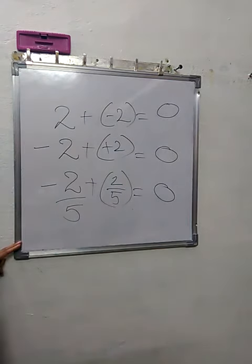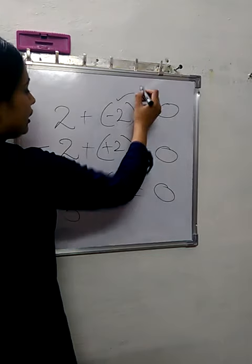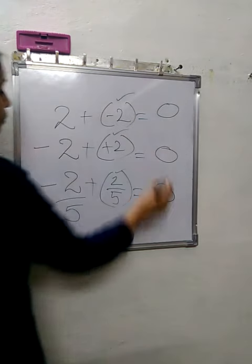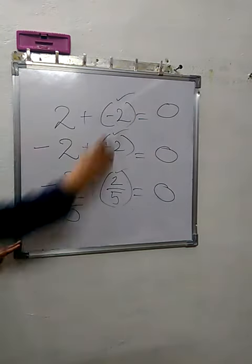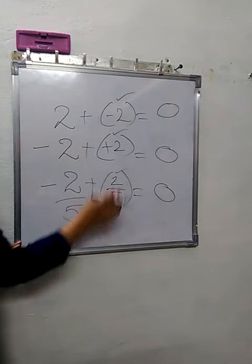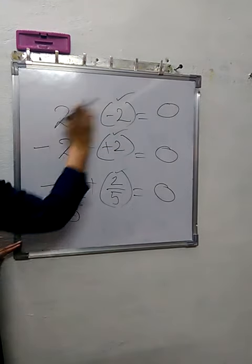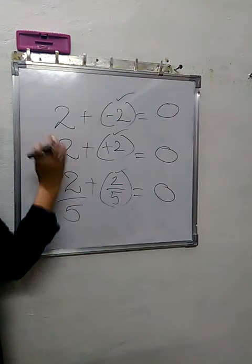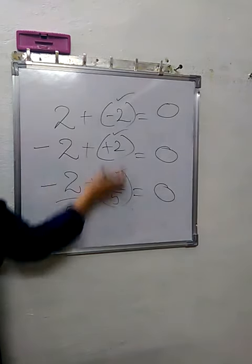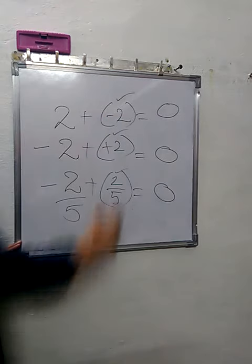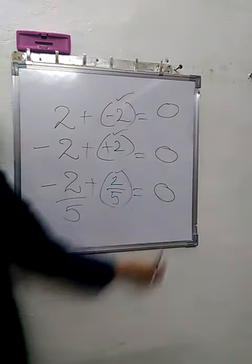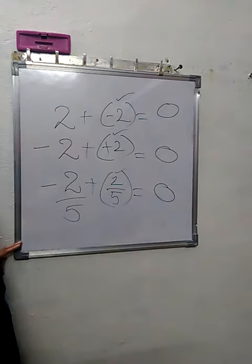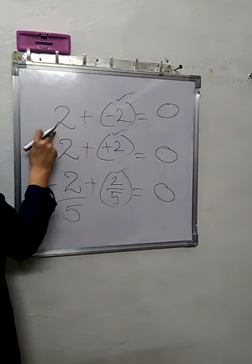Sorry, answer is 0. So these negative or positive whole numbers, integers - or I need to say whole numbers, integers, and rational numbers - when added to their negatives or positives, answer comes out to be 0. So these are known as the additive inverse.